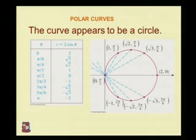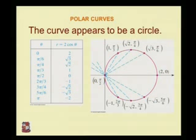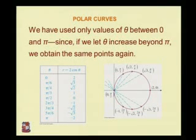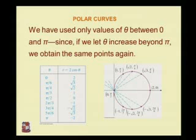The curve appears to be a circle. The plotted points include (2, 0), (√3, pi/6), (√2, pi/4), (1, pi/3), (0, pi/2). There is no need to find values beyond pi because the curve is symmetric about the x-axis, and using symmetry we can trace the other parts. If theta increases beyond pi, we obtain the same points again.